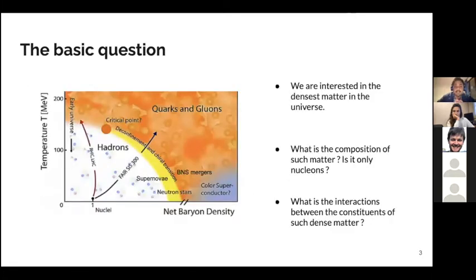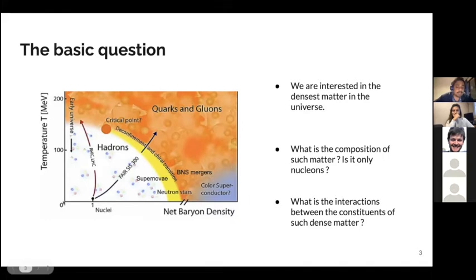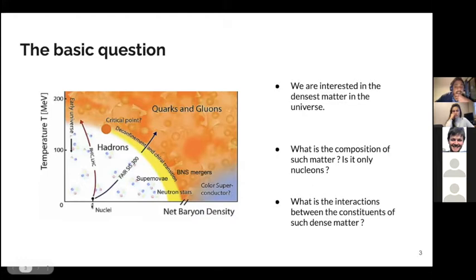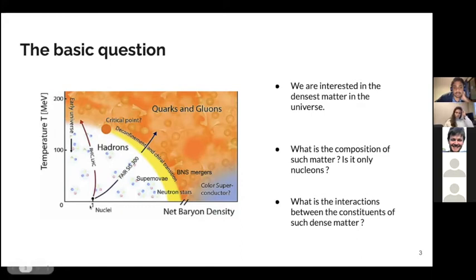The basic question we would like to answer can be expressed in the phase diagram of QCD, which depicts what happens to matter under extreme conditions of temperature and density. At zero density and increasing temperature, interesting things happen and can be explored in heavy ion collisions. But what primarily interests us is what happens when you keep the temperature fixed close to zero and increase the density. We know fairly well how matter behaves at nuclear densities — it's composed of neutrons and protons — but the question is what happens at much higher densities.